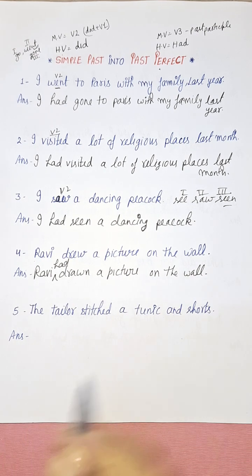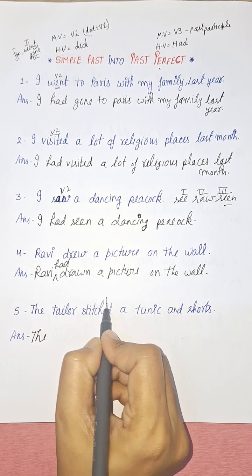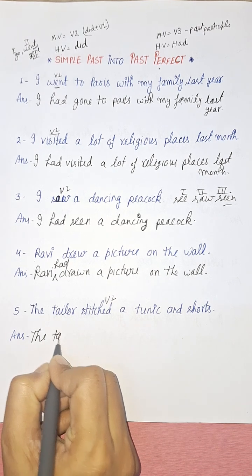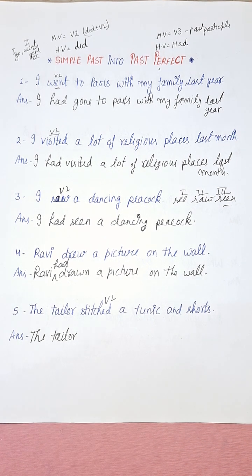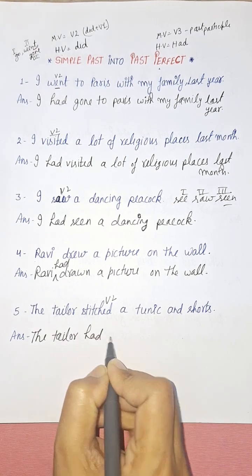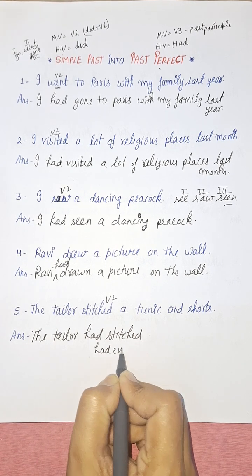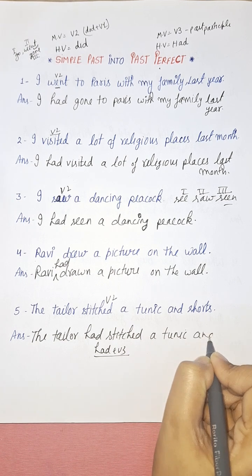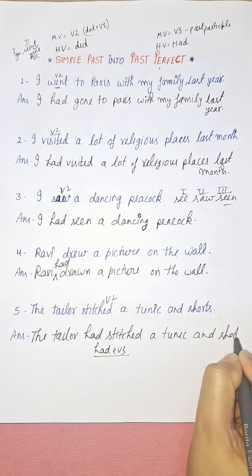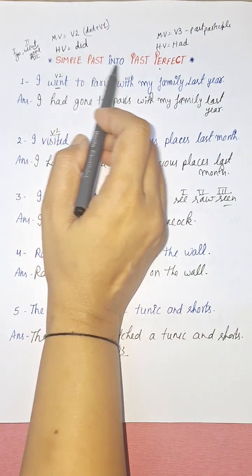The last sentence: 'The tailor stitched a tunic and shorts.' 'Stitched' shows it is simple past tense. I am continually pointing out the main verbs so you can identify whether a sentence is simple past or past perfect. With 'had,' we always use the third form of the verb. So: 'The tailor had stitched a tunic and shorts.' In this way, you can convert simple past tense into past perfect tense.